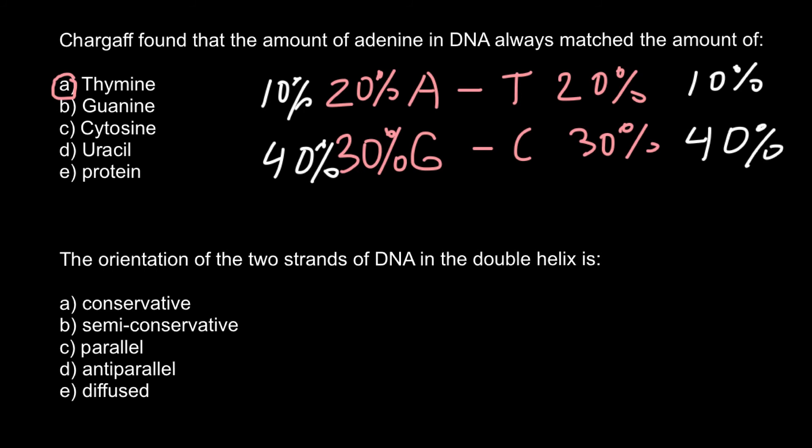The next question: the orientation of the two strands of DNA in the double helix is — answer A: conservative, B: semi-conservative. As you know, semi-conservative describes replication of double-stranded DNA, but our question is about orientation, not replication.